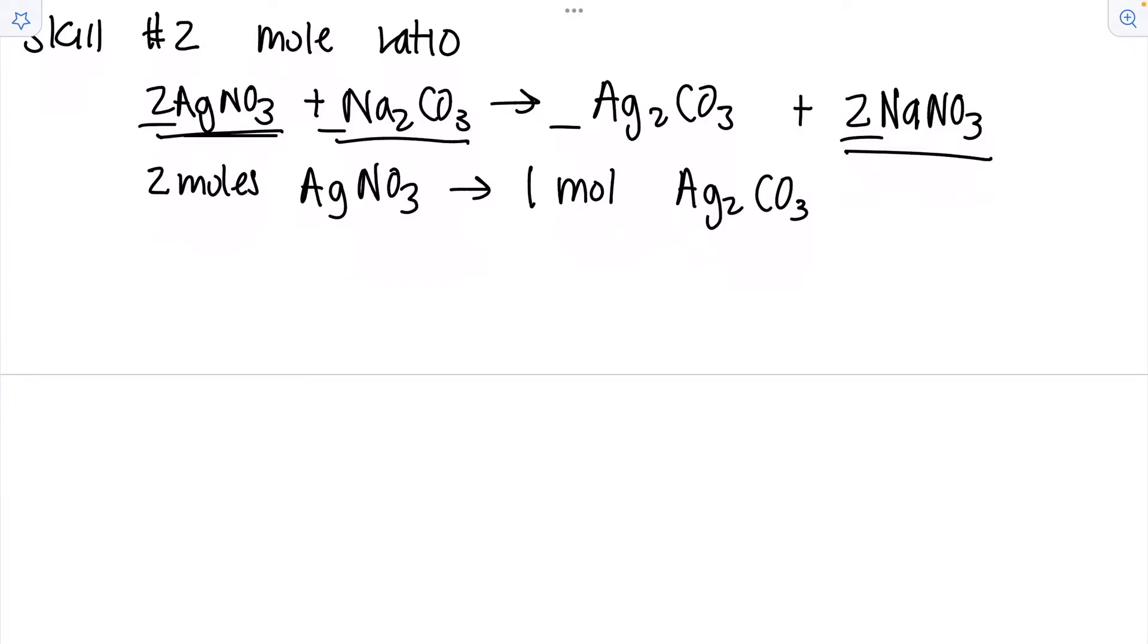So we can use these numbers to do some larger or smaller ratios. Let's say I started with six moles of silver nitrate. How many moles of sodium carbonate would I need to complete the reaction? Well here the original recipe is a two to one mole ratio. Instead of having two I have six so I would need three moles of sodium carbonate.